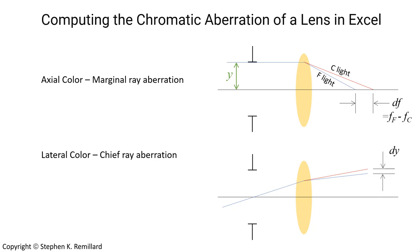That's why we're going to be talking about axial color today — how to calculate the chromatic aberration of a lens. The measure of axial color is the difference in marginal focal point for the red light and the blue light: F light and C light.